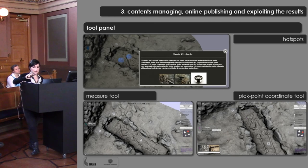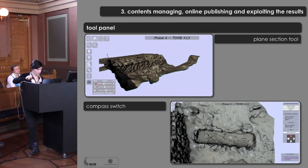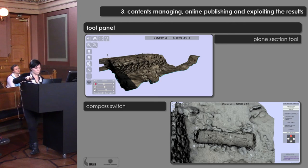On the left side, the tool panel offers a wide range of useful instruments: hotspots to show specific finds in the burials; a measure tool to take measurements on the 3D surface; and a peak point coordinate tool to get the georeferenced coordinates of a specific point. A useful 3D HOPE tool is also the plane section tool, which lets the user slice the different levels of the stratigraphic sequence with cut-through planes. Finally, the compass button can be used to set the orientation to north.